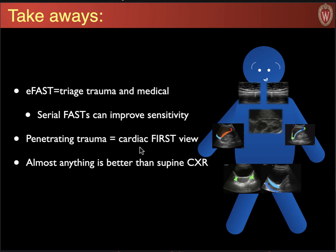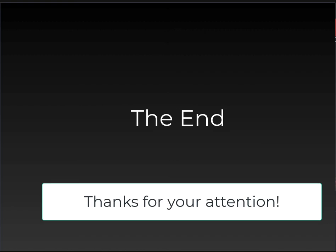The takeaways for today: the extended FAST can be used to triage not only trauma patients but also medical patients. Serial FASTs can improve your sensitivity, certainly with trauma, but also for medical patients with dynamic presentations. For penetrating trauma, cardiac should always be your first view. Otherwise, start with the right upper quadrant because that's the most commonly positive view in blunt trauma and medical problems. And almost anything is better than a supine chest x-ray — lung ultrasound is a very good stand-in for CT if you can't get the patient there. Thank you for your time.